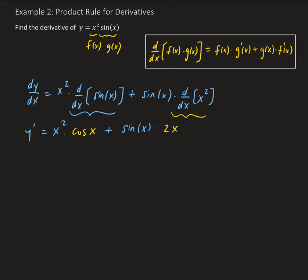So we can go ahead and rewrite this as x squared times cosine x plus 2x times sine x. All right, so that is our derivative for y.